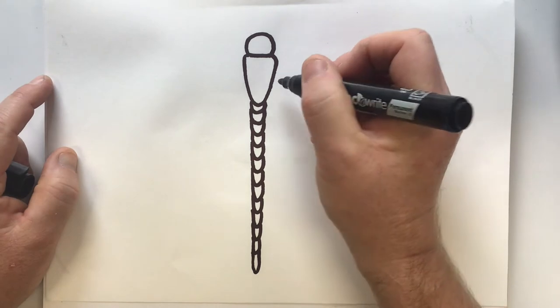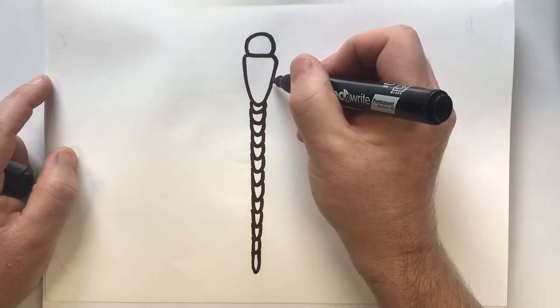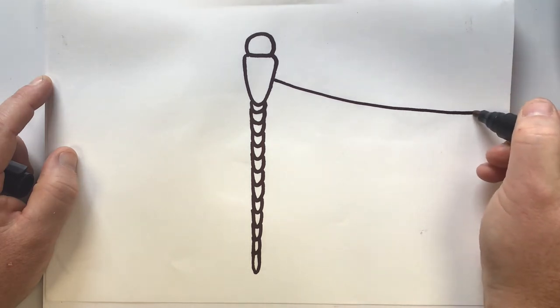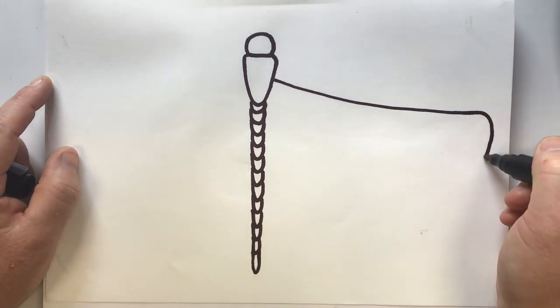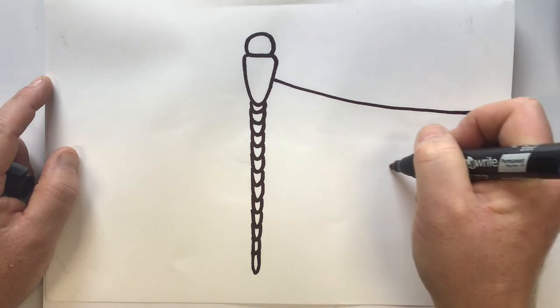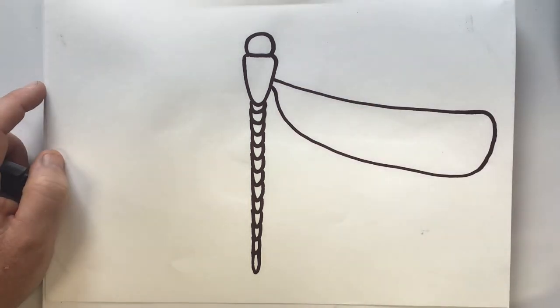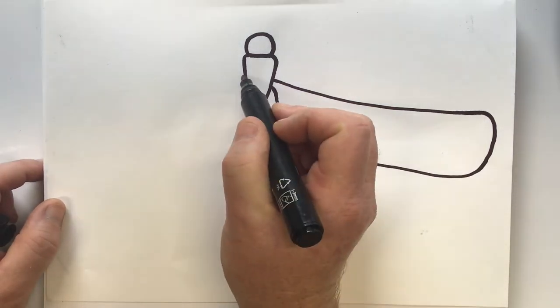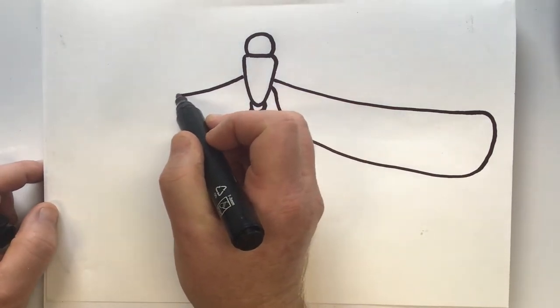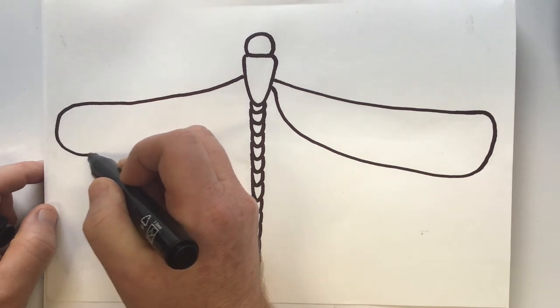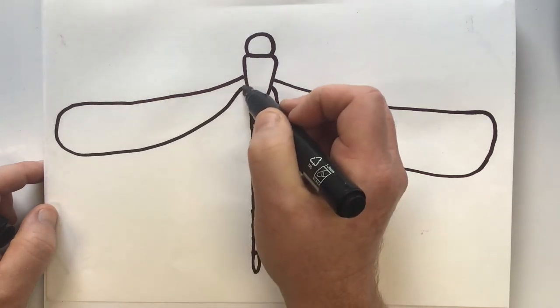Okay, now I'm going to add on a wing. To add on a wing I'm going to put a long line. It comes out, curves around, and curves all the way back and then joins up near the start. Let's do one the same on the other side. Curve it all the way out, curve it round, come all the way back to the start. There's a wing.